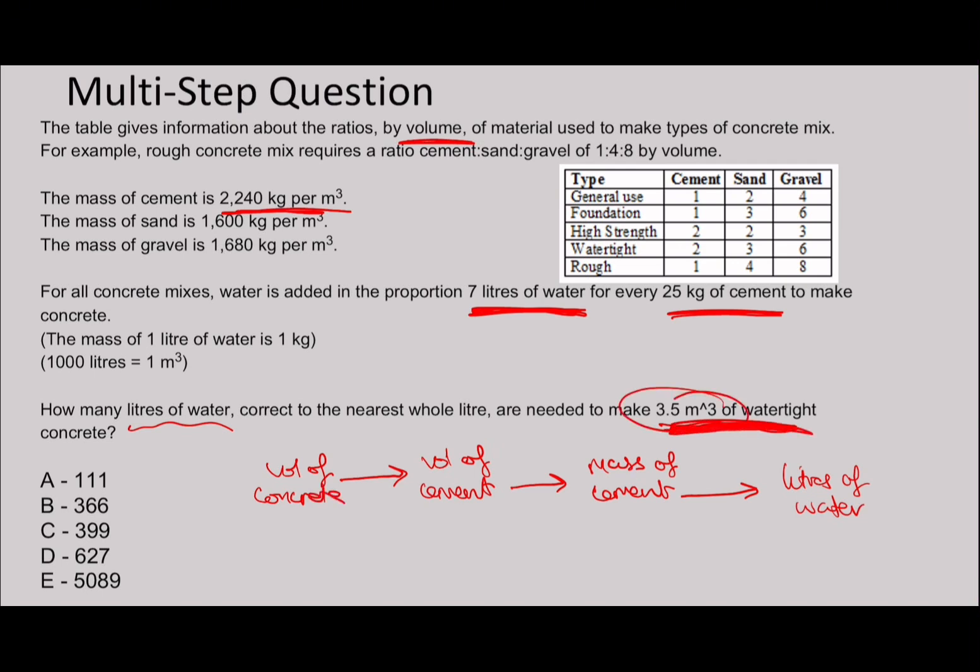And you can see that leads us to our starting step. So the problem is often students often try and go from here onwards, but it's better to work backwards because that means there's less finite possibilities. Because if you work forward from volume of concrete, you could do anything with the volume of concrete. So let's talk through this answer. So 3.5 meters cubed of watertight concrete. We want the volume of cement, and this is watertight. So you can see the volume of cement is going to be 2 parts to 3 to 6. So in total, there's 11 parts, and cement is 2 of those 11 parts in regards to the volume. So we times by 2 over 11, which gives us 7 over 11 meters cubed of cement.